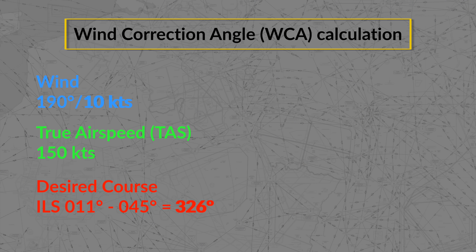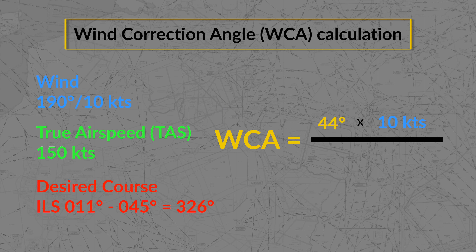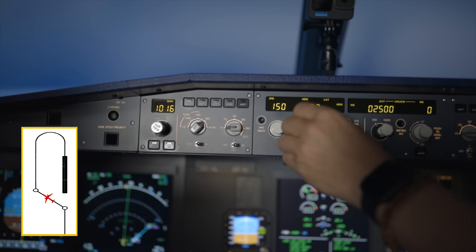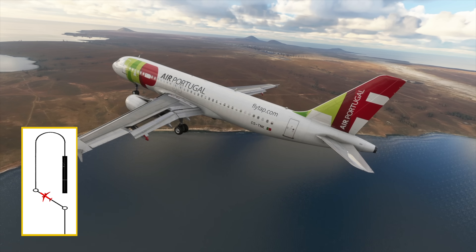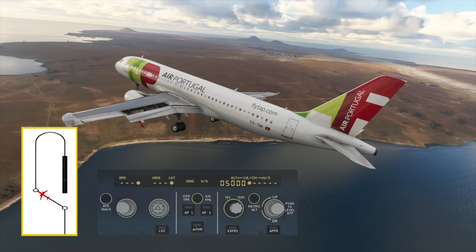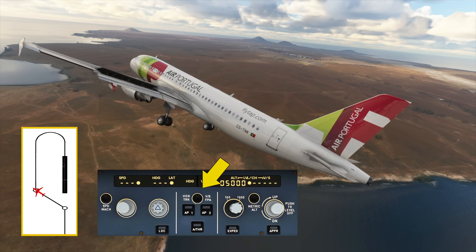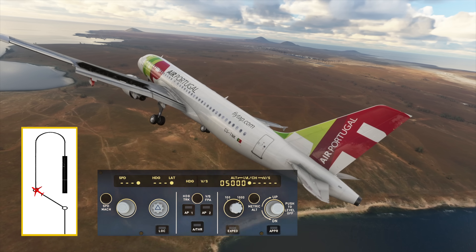Now a quick wind correction angle calculation. The formula to use is: wind angle of 44 degrees times wind speed of 10 knots, divided by true airspeed of 150 knots, equals 3 degrees wind correction angle — which in our case we needed to subtract from our desired course to fly the correct track. Now with track 011, instead of calculating the heading with the wind correction manually, you can just press the Track FPA button and your heading selector becomes a track selector.